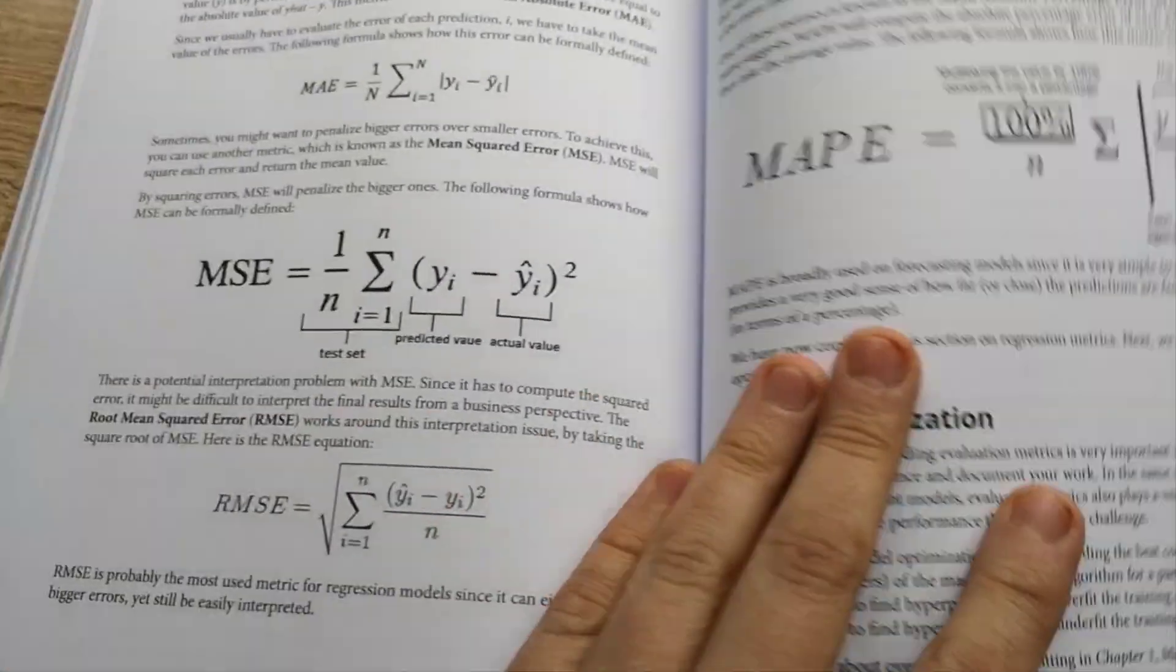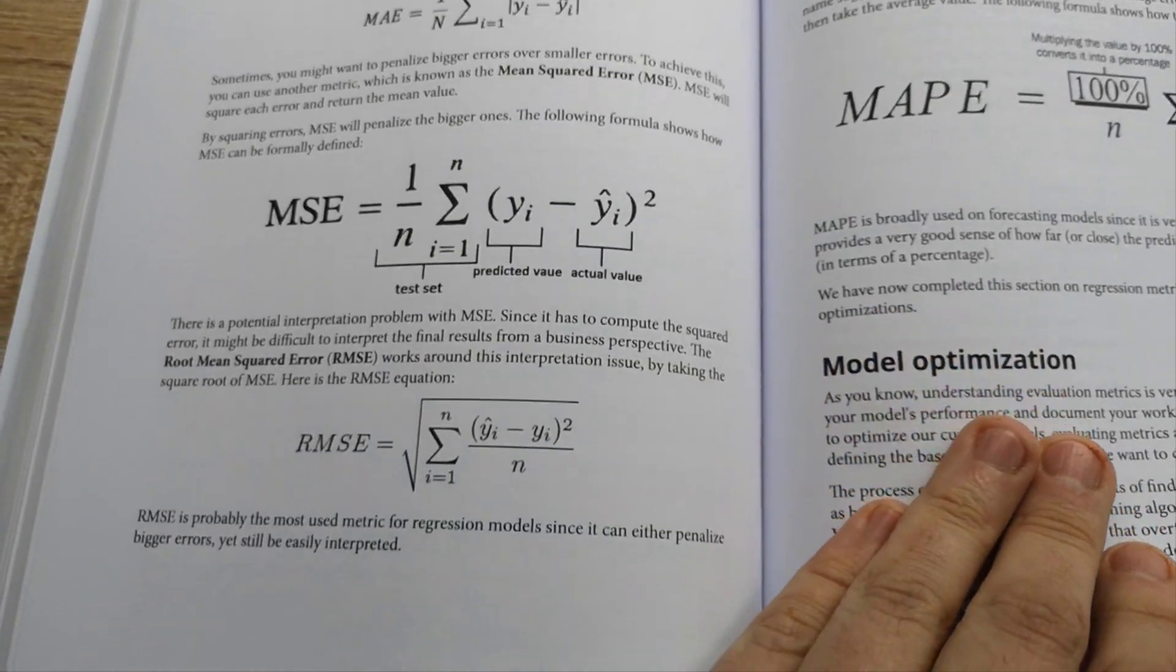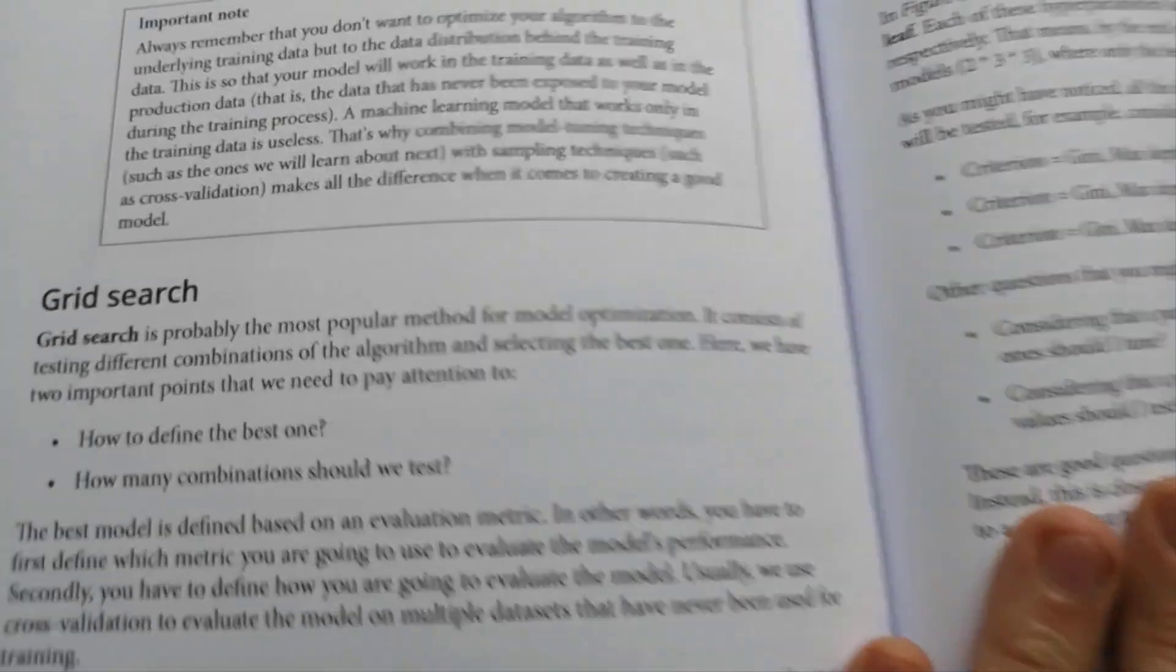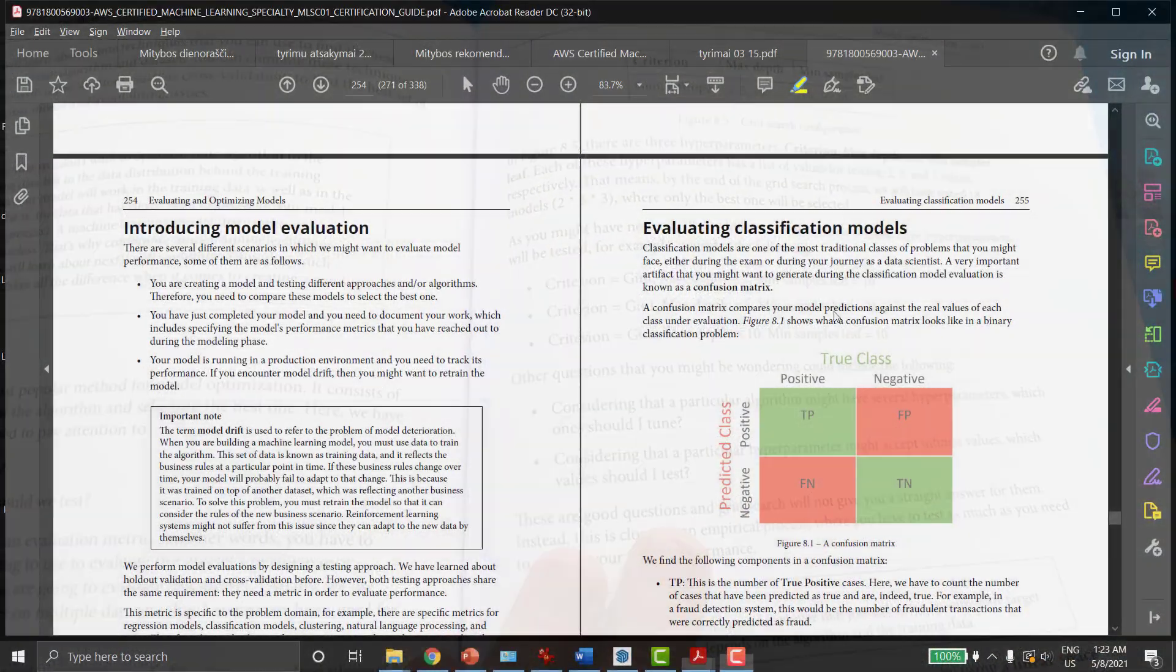Please pay attention to special notes and do not forget what is the model drift, cross-validation, proportions of training and test set, and very, very, very important, confusion matrix.